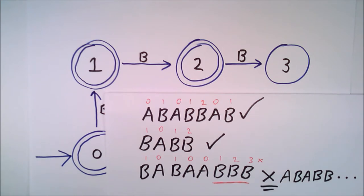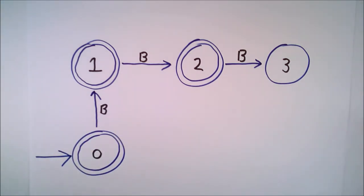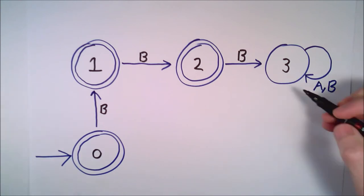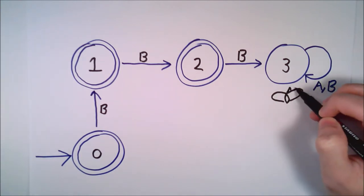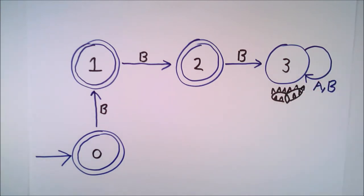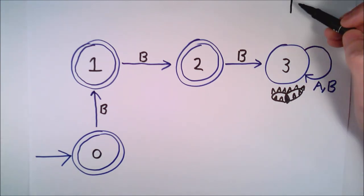Let's show this by adding a loop transition back to state three, and calling that AB. Both A and B follow this transition. State three can also be called a trap state, as once we get there, there is no transition out again.